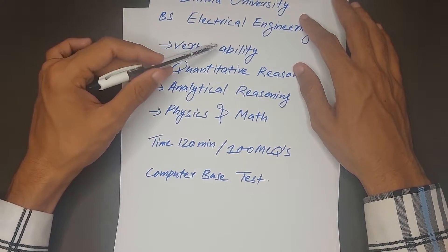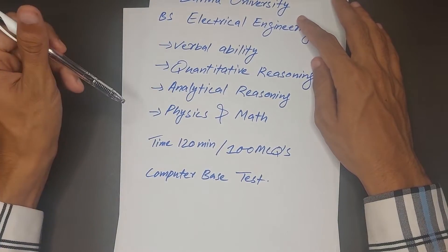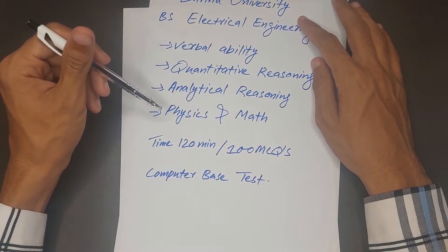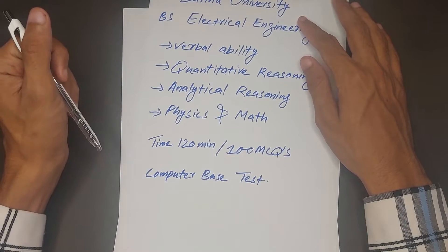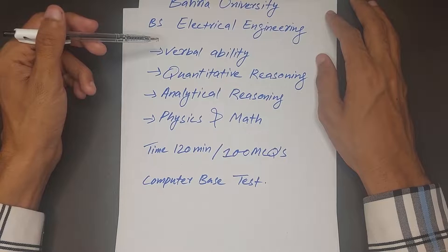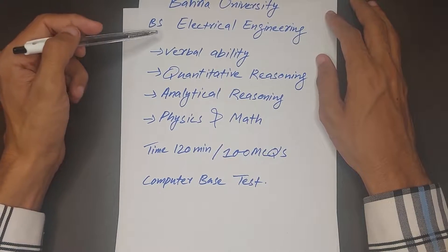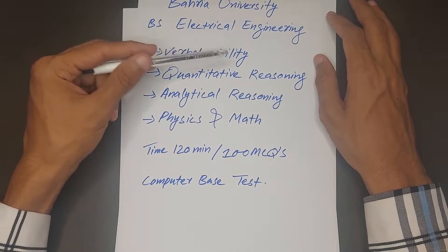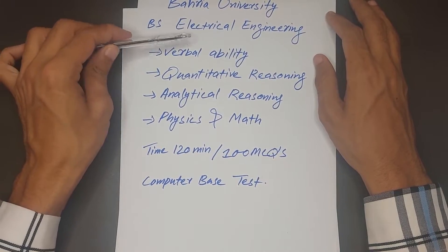One of them is verbal ability, second one is quantitative reasoning as well as analytical reasoning, and physics and math will also come in your test. Before going on any further discussion, we need to understand the definition of the first portion, which is verbal ability. What is verbal ability?